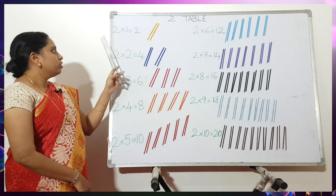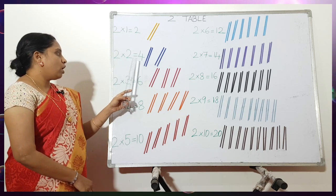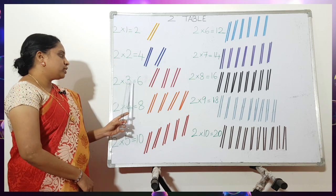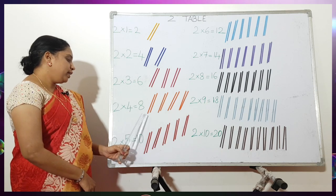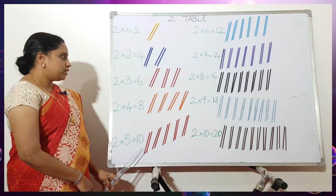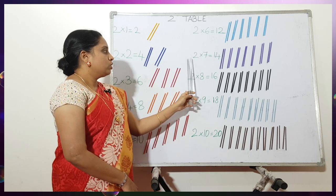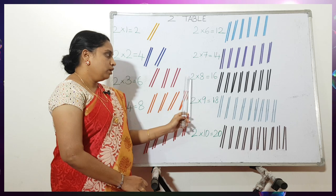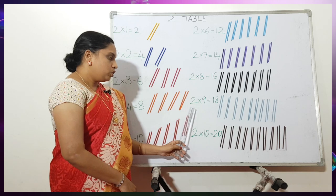So children, while learning, you have to learn the two table like this: 2 ones are 2, 2 twos are 4, 2 threes are 6, 2 fours are 8, 2 fives are 10, 2 sixes are 12, 2 sevens are 14.